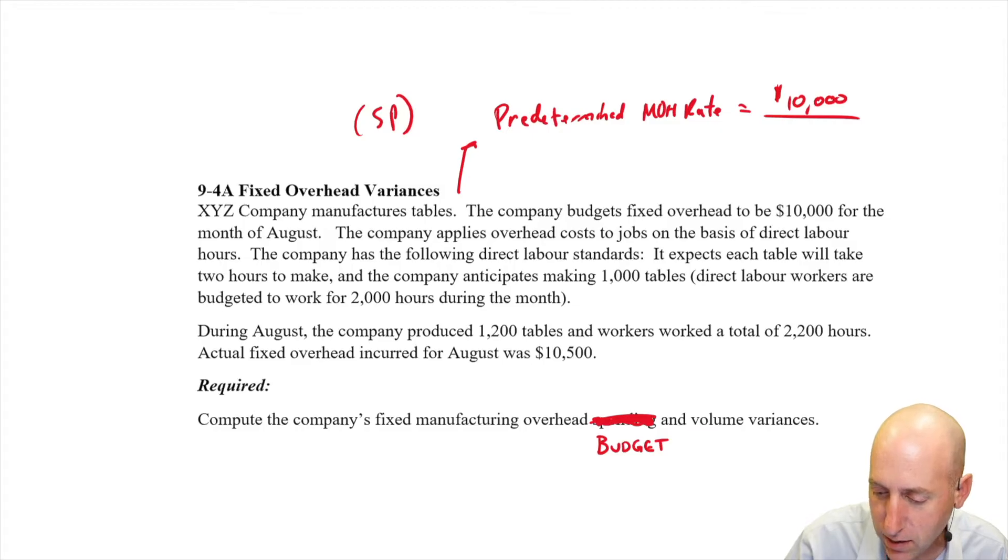The company applies overhead costs on the basis of direct labor hours. So I'm going to take estimated overhead divided by estimated direct labor hours. The company has the following direct labor standards. It expects each table will take two hours to make and the company anticipates making a thousand tables. Direct labor workers are budgeted to work 2000 hours during the month. So we get a rate of $5 per direct labor hour. That's going to come in handy much later. I always like to write this out as a number so I don't lose sight of it later on. Two hours is how long a table takes to make.